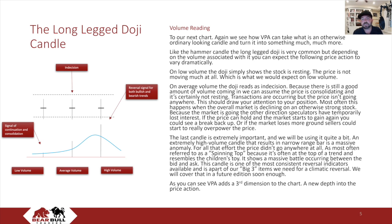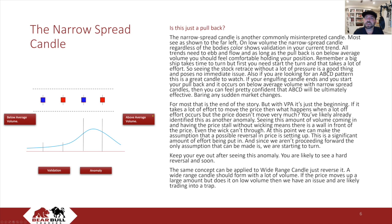As you can see, VPA adds a third dimension to the chart, a new depth into the price action. The narrow spread candle is another commonly misinterpreted candle — most see it as shown to the far left. On low volume, the narrow spread candle, regardless of the body's color, shows validation in your current trend. All trends need to ebb and flow, and as long as the pullback is on below average volume, you should feel comfortable holding your position. A big ship takes time to turn, but first you need to start the turn, and that takes a lot of effort. So seeing the stock retrace without a lot of pressure is a good thing and poses no immediate issue.